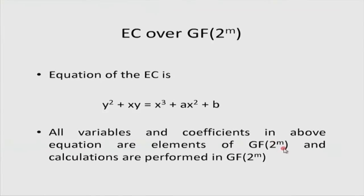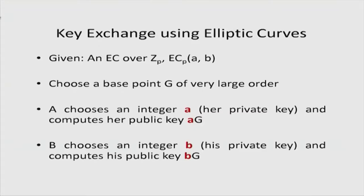For elliptic curves over binary fields GF(2^m), the equation is slightly different: y² + xy = x³ + ax² + b, where all coefficients and coordinates are elements of GF(2^m). Elements can be represented as binary strings of length m. With this mathematical foundation, we can write programs to check whether a point belongs to an elliptic curve, find the negative of a point, add two points, and double a point.